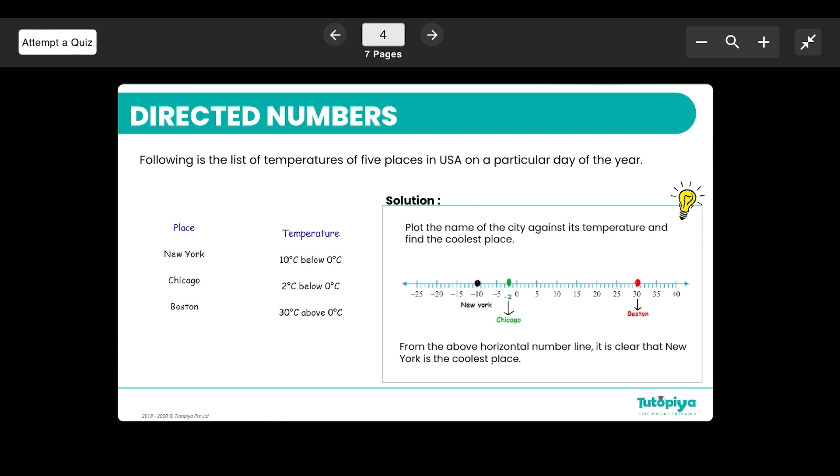This is one of the most common examples about directed numbers. Following is the list of temperature of five places in the USA on a particular day. You can see New York, Chicago, Boston and their temperatures given.